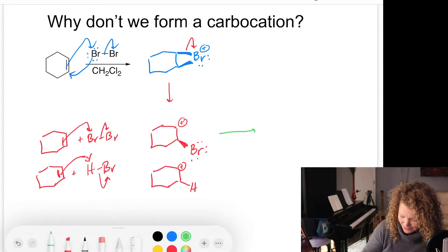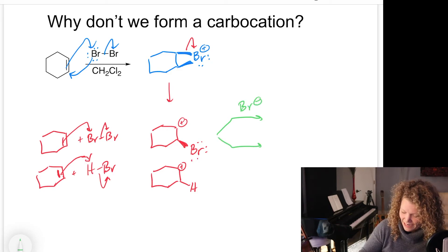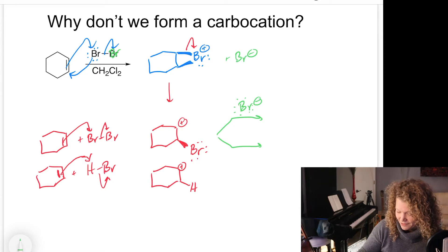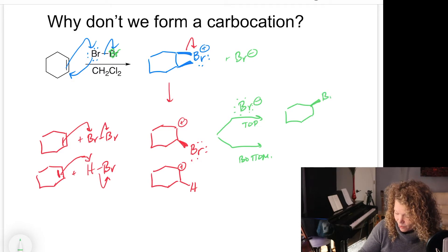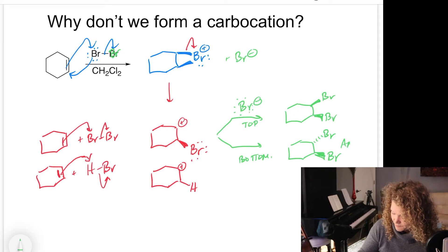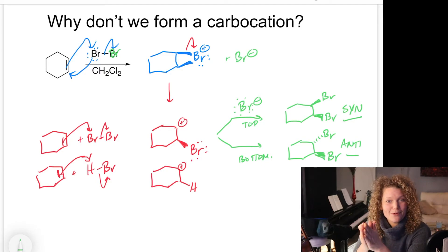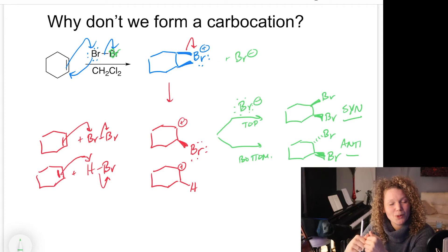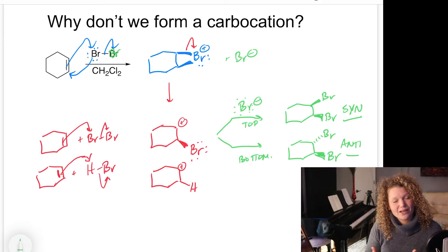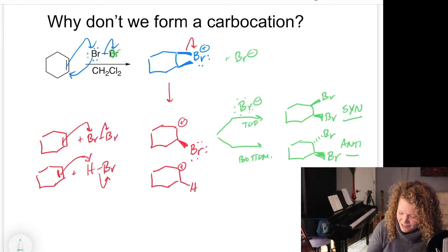If we made a carbocation like I have here in red, you could imagine that the bromine that we kicked out, so we have this Br minus that was kicked out, could add on either side of this carbocation to where if it was adding on the top or the bottom we would end up getting two products. So if on this top one we added it on the top, it would be on the same side as our original addition of bromine. If we added it on the bottom, we would see this anti-addition. The problem with this is we don't see any syn addition when we look at the products of this reaction.